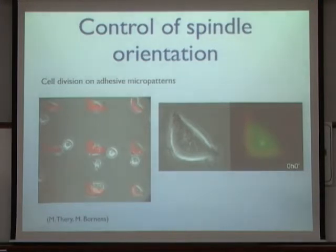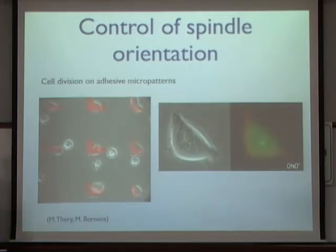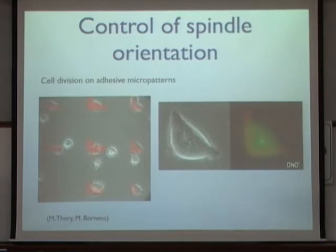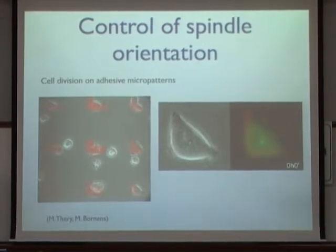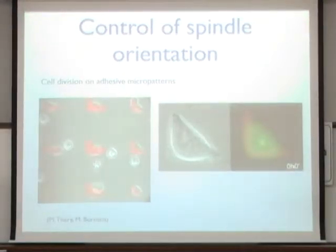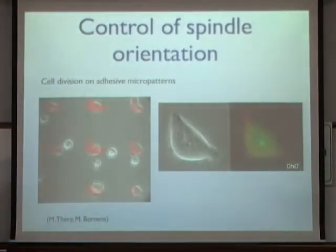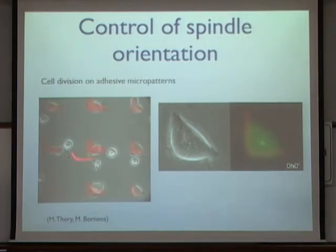The idea is that spindle orientation is influenced by the direct adhesive environment of a cell, and this information is conveyed to the spindle, which then orients in a particular way. This is studied in the group of Michel Bornens in Paris using adhesive micropatterns on which cultured cells adhere, then observing cell division on these micropatterns with different geometries. The question is how the orientation of cell division depends on the pattern geometry.